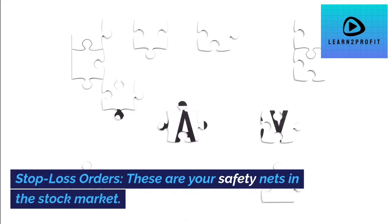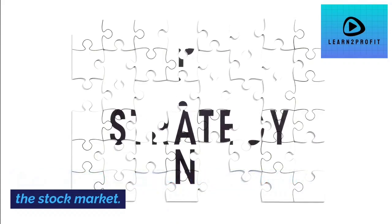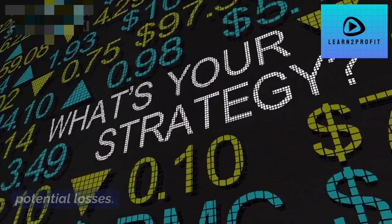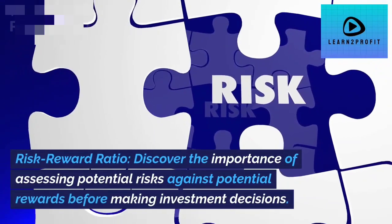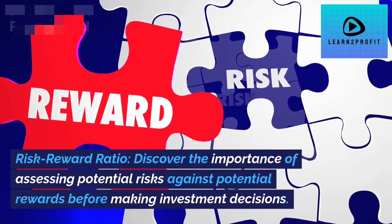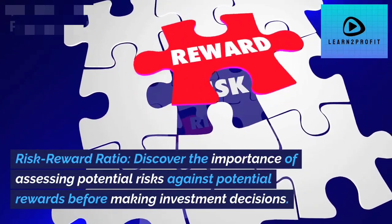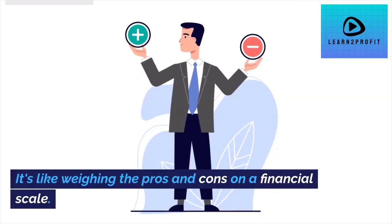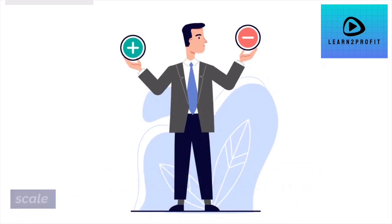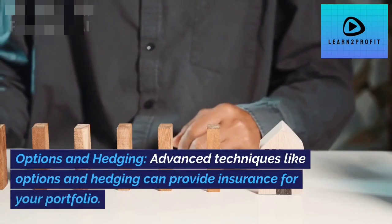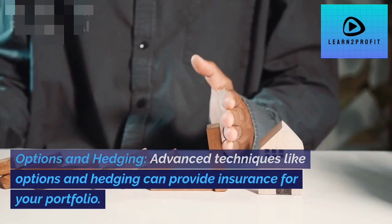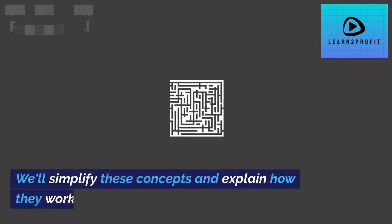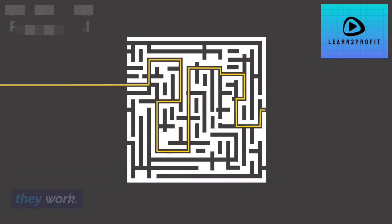Stop loss orders are your safety nets in the stock market — learn how to use them effectively to limit potential losses. The risk-reward ratio helps you assess potential risks against potential rewards before making investment decisions; it's like weighing the pros and cons on a financial scale. Options and hedging are advanced techniques that can provide insurance for your portfolio, and we'll simplify these concepts and explain how they work.